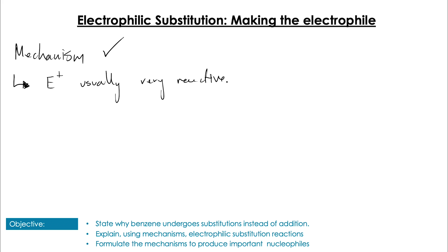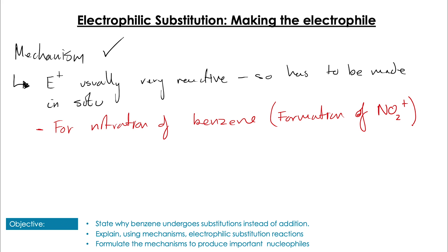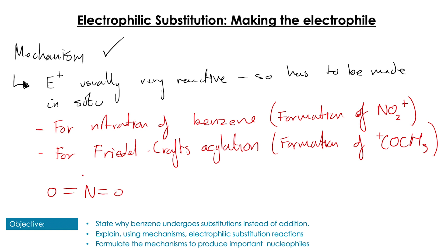So while the mechanism always follows the same process, the question tends to be where are these electrophiles coming from? These reactive positive species that we need to do these reactions do not exist by themselves - you can't get bottles of C2H5+. So instead, they have to be made in situ in the actual reaction. We're going to look at two of these: the nitration of benzene, looking at the production of the NO2+ electrophile, and the acylation of benzene, looking at the formation of the acylium ion - that's the COCH3+ ion.